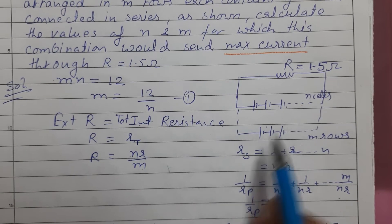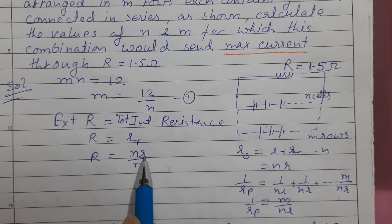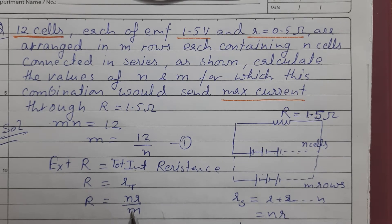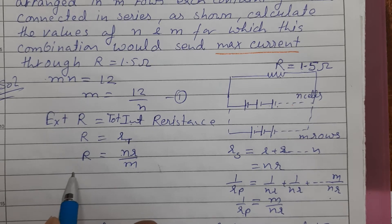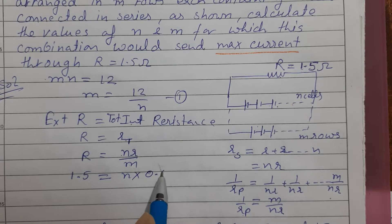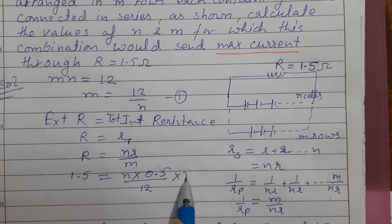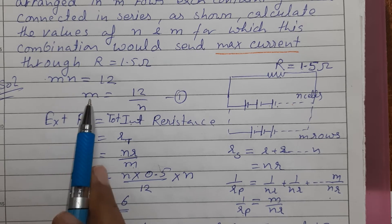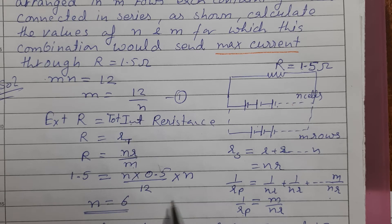Now we set R external equal to R total internal. We have R equal to 1.5, r equal to 0.5, and M equal to 12 by N. Substituting these values and simplifying, the N terms cancel and we get N equal to 6.